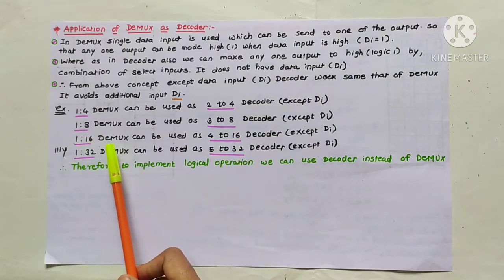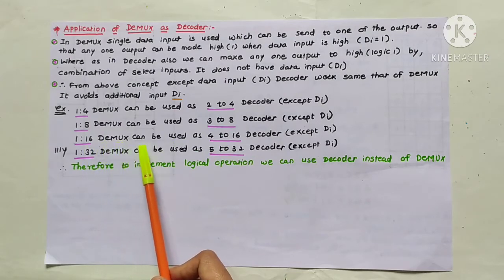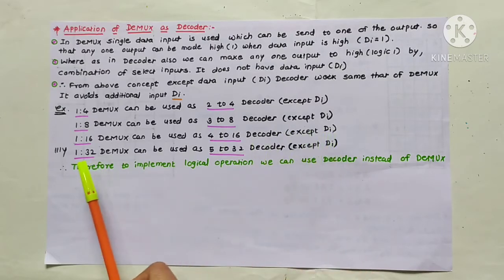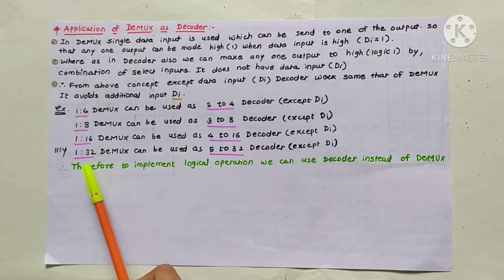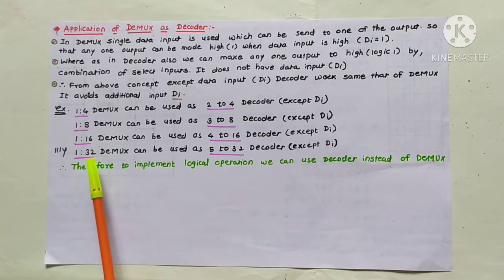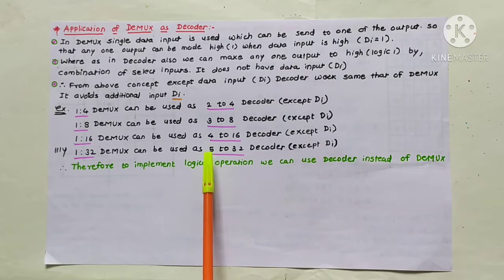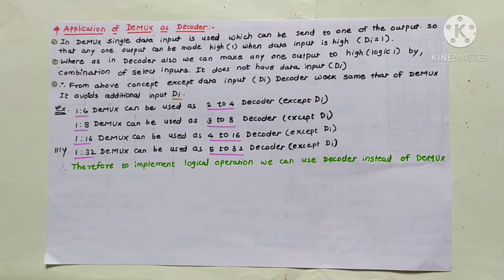A 1-to-16 demultiplexer has 16 outputs, which means 4 select lines are necessary — those 4 select lines are the 4-bit BCD input to the decoder. So a 1-to-16 demultiplexer can be used as a 4-to-16 decoder except for data input. Similarly, a 1-to-32 demultiplexer — since 2 raised to 5 equals 32 — can be used as a 5-to-32 decoder except for DI. The 5-bit BCD input produces 32 decimal outputs.